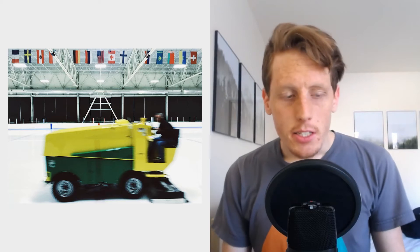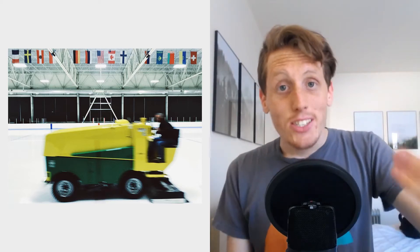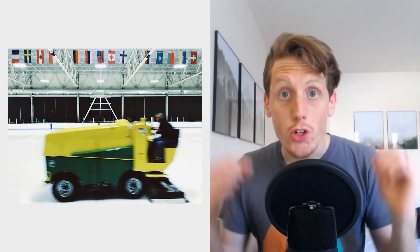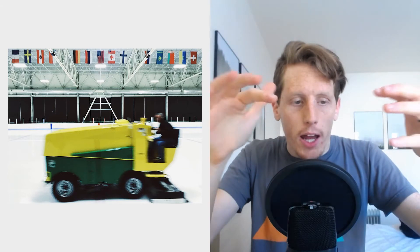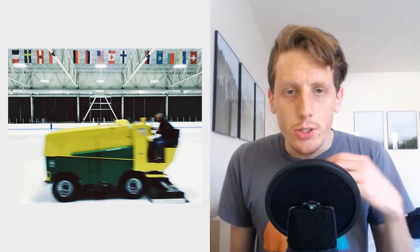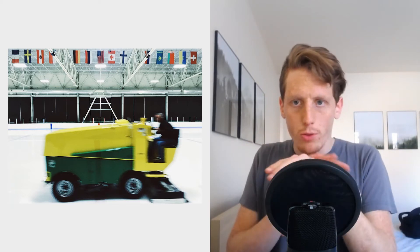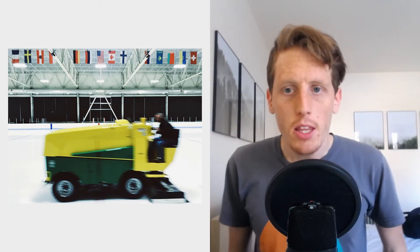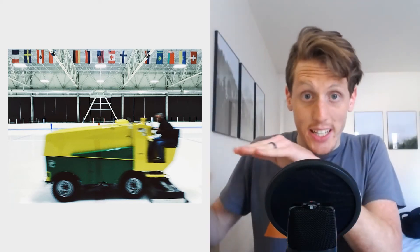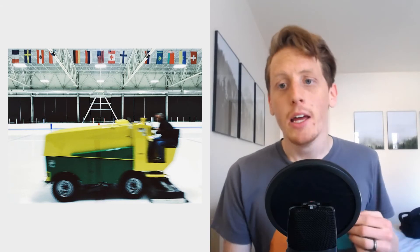One way I added some intensity to this image and the feeling of motion is by using motion blur. The iPhone likes to do this in any situation where you're not outside — it drops down the shutter speed to introduce more light into the scene. Sometimes this is a bad thing, sometimes a good thing. In this case, it was a very good thing. I also put the Zamboni very close to us and close to the bottom of the frame, which is a sort of scary technique that can go horribly wrong, but it worked well here.